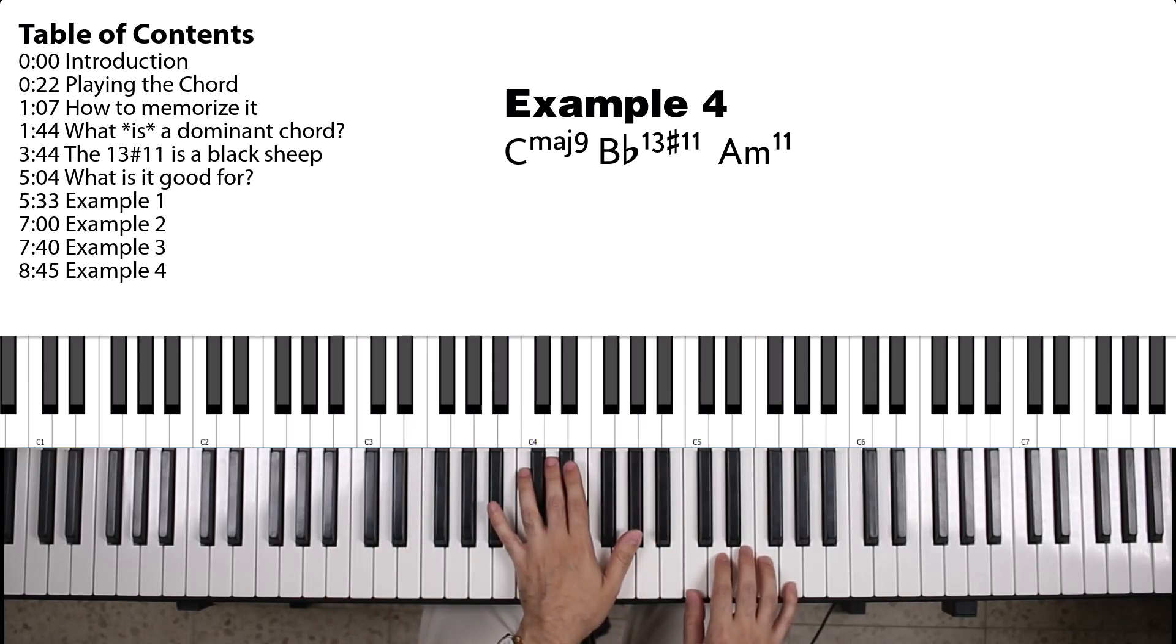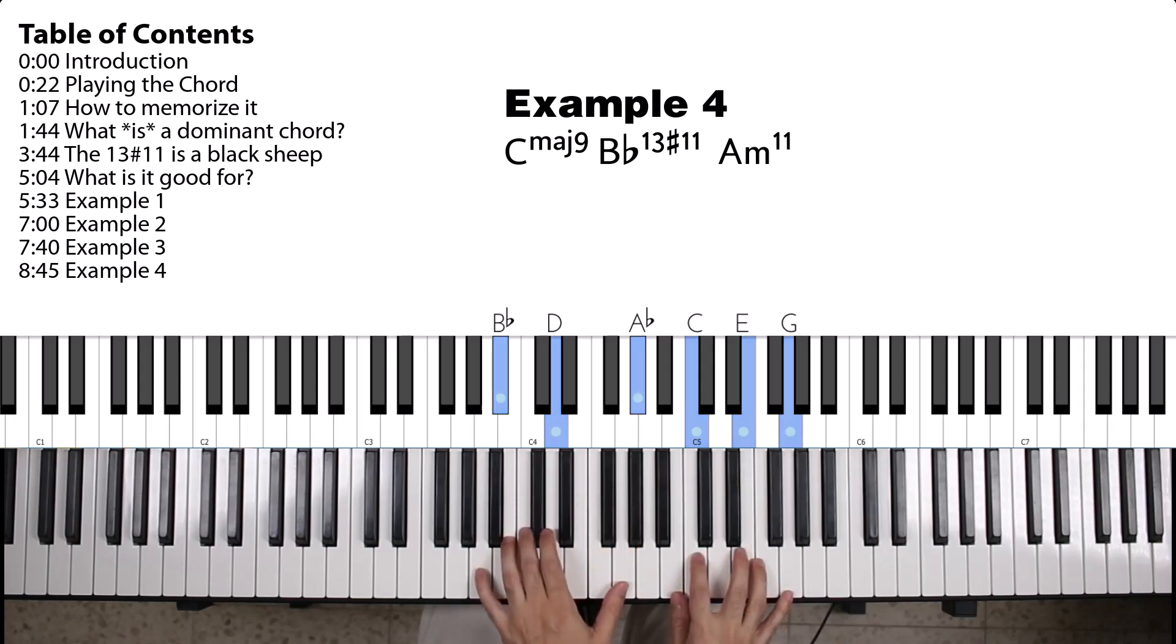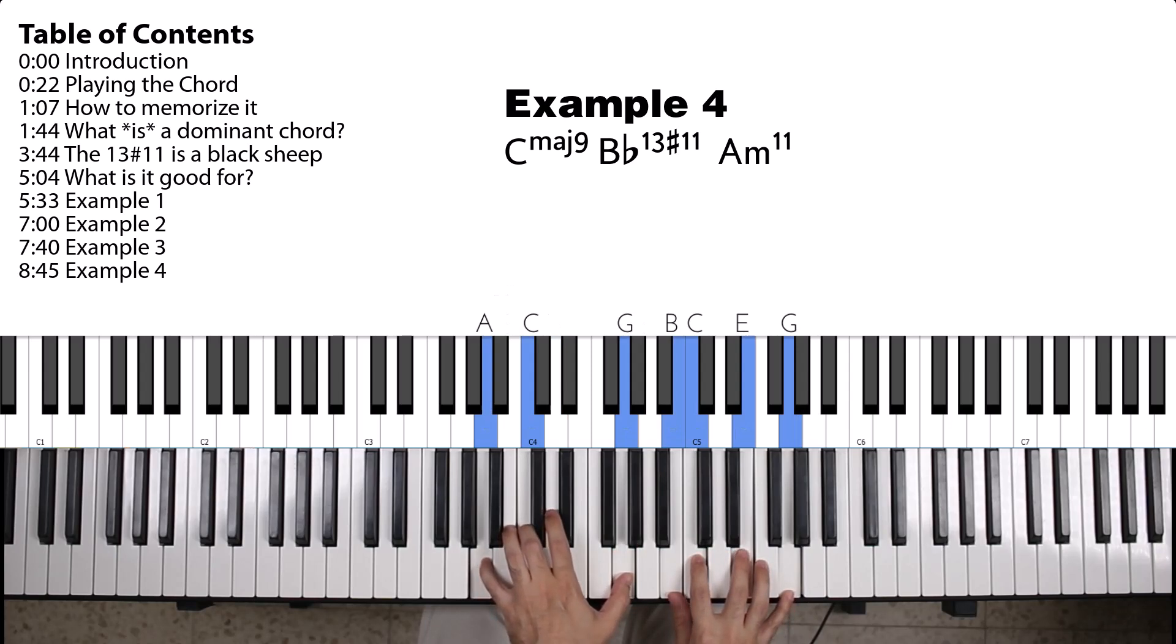So, again, you have this chromatic motion. A B flat, dominant 7, or dominant 13 sharp 11, resolving down a semitone to an A minor 9.